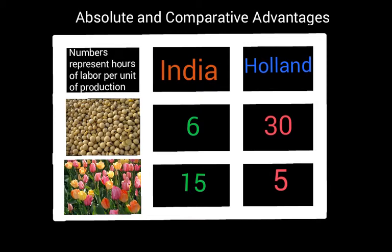It's probably clear which country should specialize in which product. India is much more efficient in making soybeans — it only takes them six hours, so they're five times more efficient than Holland. Holland only takes five hours to make a case of tulips compared to India's 15 hours, so Holland is three times more efficient. We can say that India has an absolute advantage in making soybeans and Holland has an absolute advantage in making tulips.